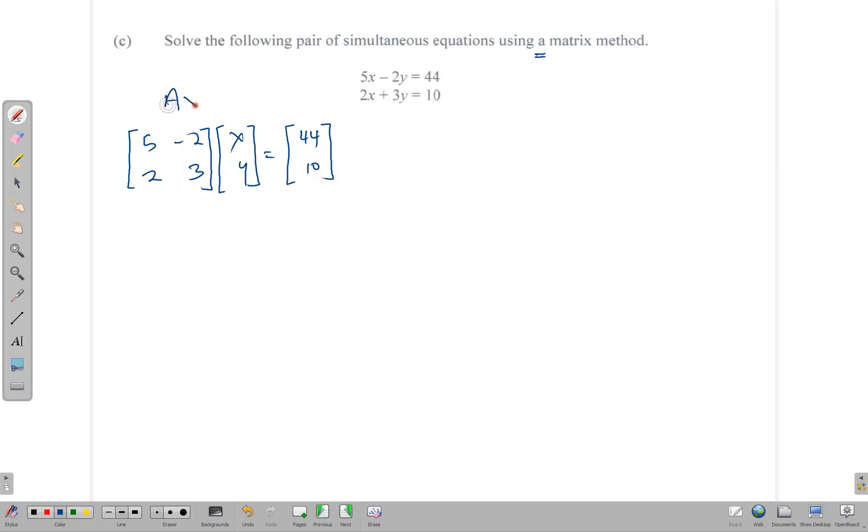So we have 5, negative 2, 2, 3, and of course multiplied by XY gives us 44 and 10. So once you write it in matrix form, the matrix form is AX equal B. Once you have written it in that form, then we need to find the inverse of this. To find the inverse, first we find the determinant. The determinant is equal to 3 times 5 minus 2 times negative 2, which gives us 15 plus 4, which is 19.